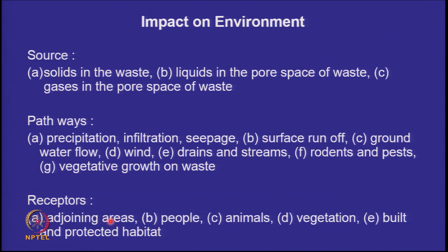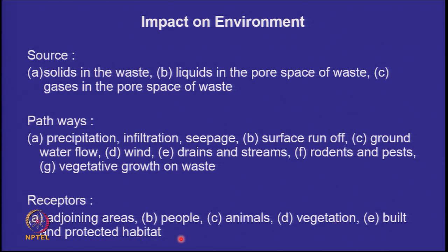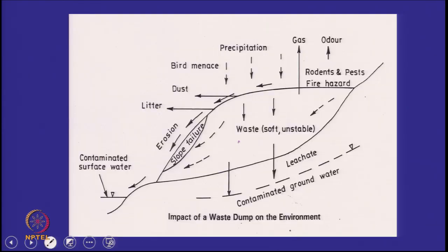The receptors are adjoining areas, people, animals, vegetation, and the built and protected habitat. The moment we put the waste on the ground, all these things are happening, and our job is to prevent this from happening.